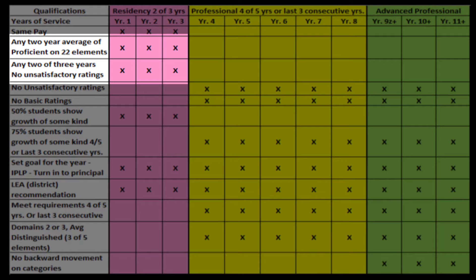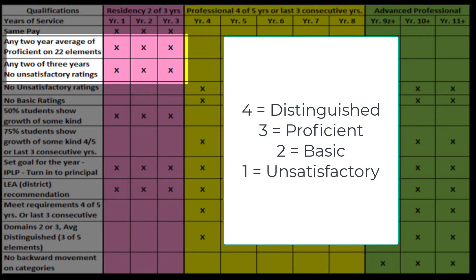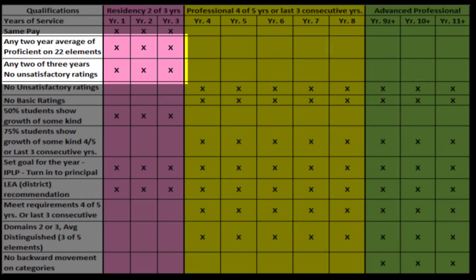What does that mean for those 22 components? They must average proficient on the Danielson Evaluation Model for the 22 components. Scoring is a 4 for distinguished, 3 for proficient, 2 for basic, and 1 for unsatisfactory. Those in residency must average at least 3.0 on those components.